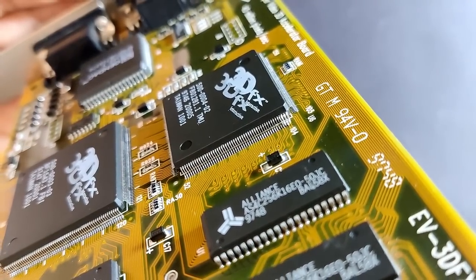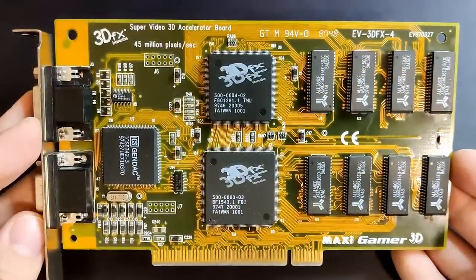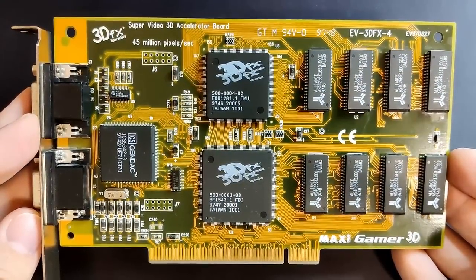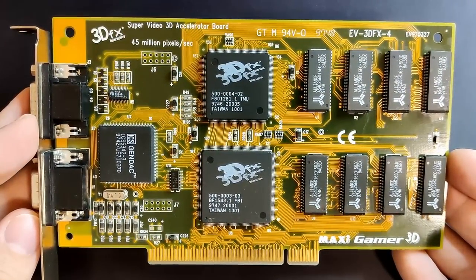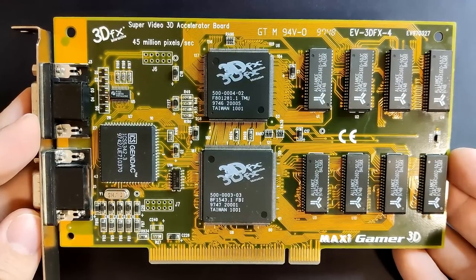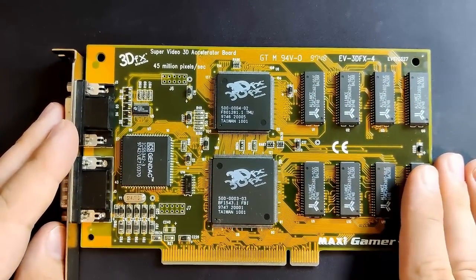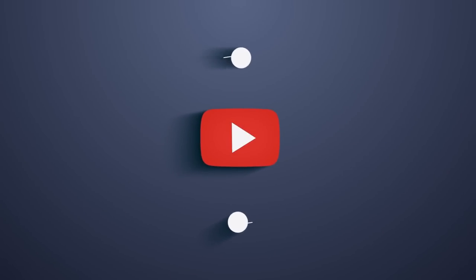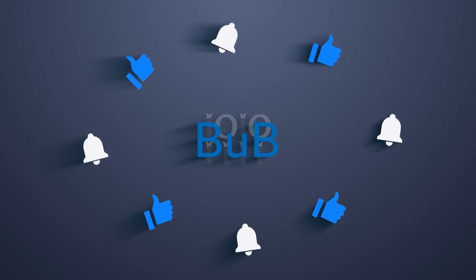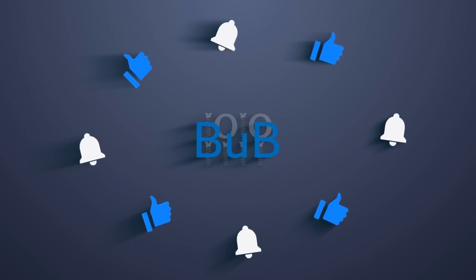The next time you will see this card, we will upgrade it to 8MB by hooking up two memory expansion boards to the TMU and the FBI chips. If you are happy that another 3DFX card has been brought back from the dead and haven't already done so, please consider liking this video and subscribe to my channel. This will help the channel a lot and keep me motivated to create more content like this.